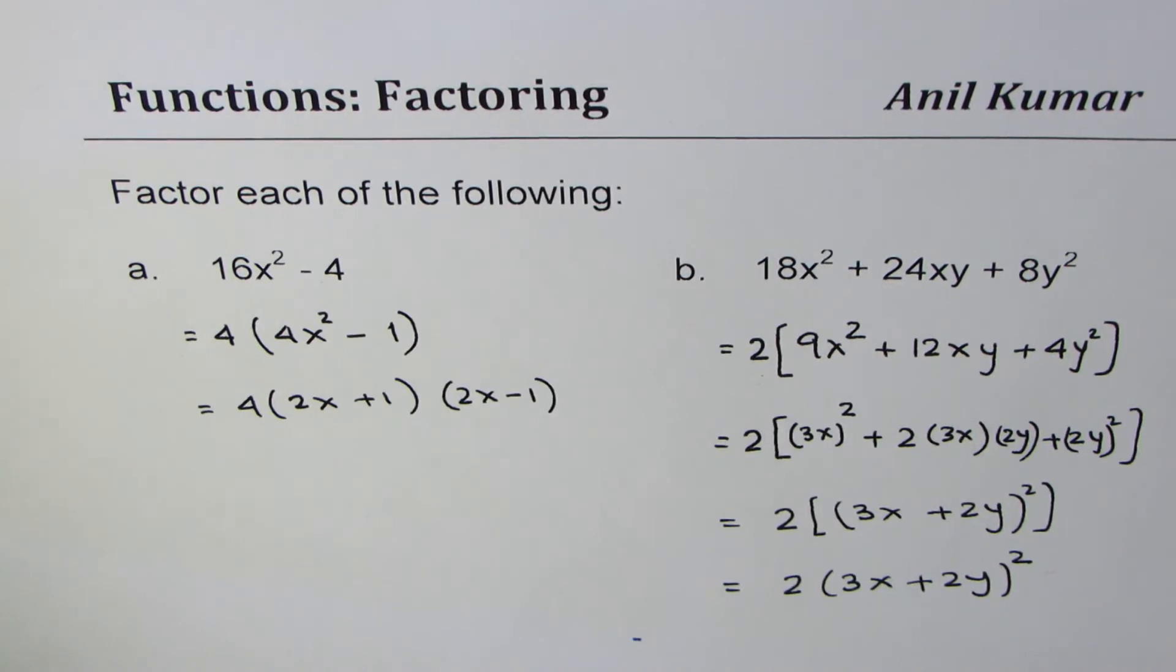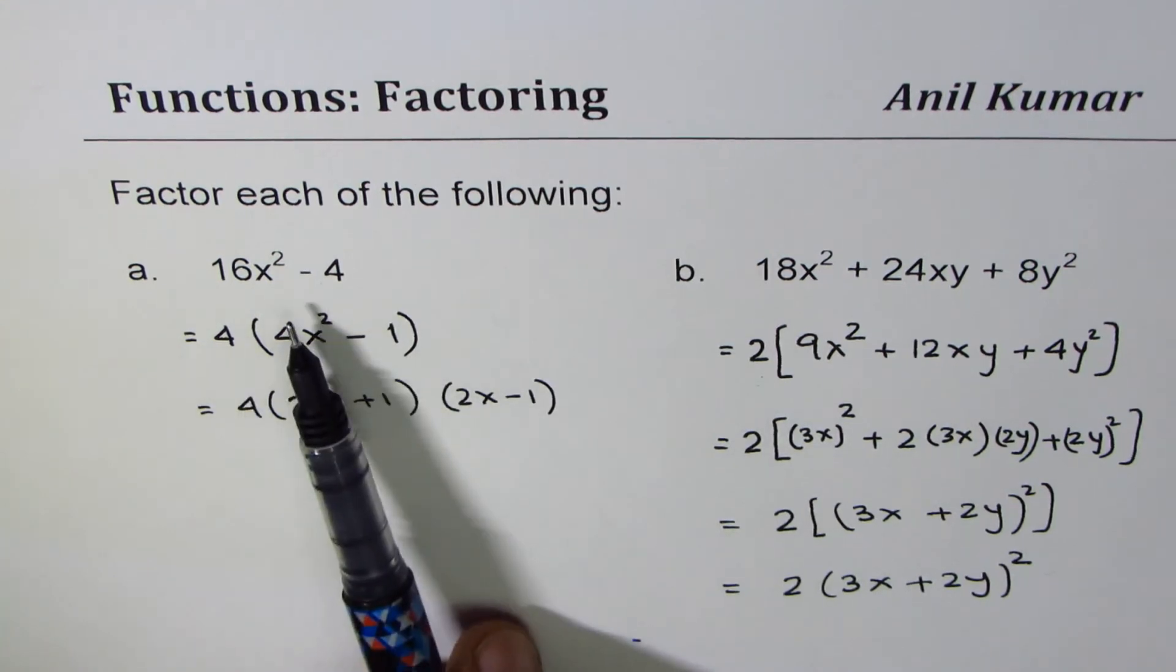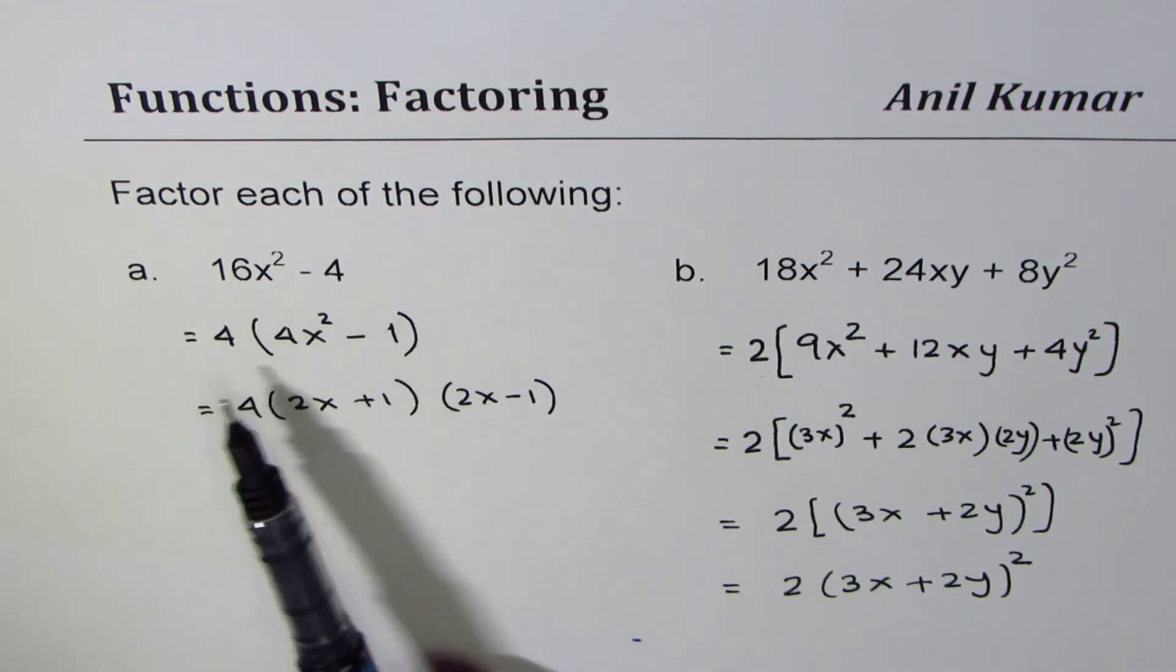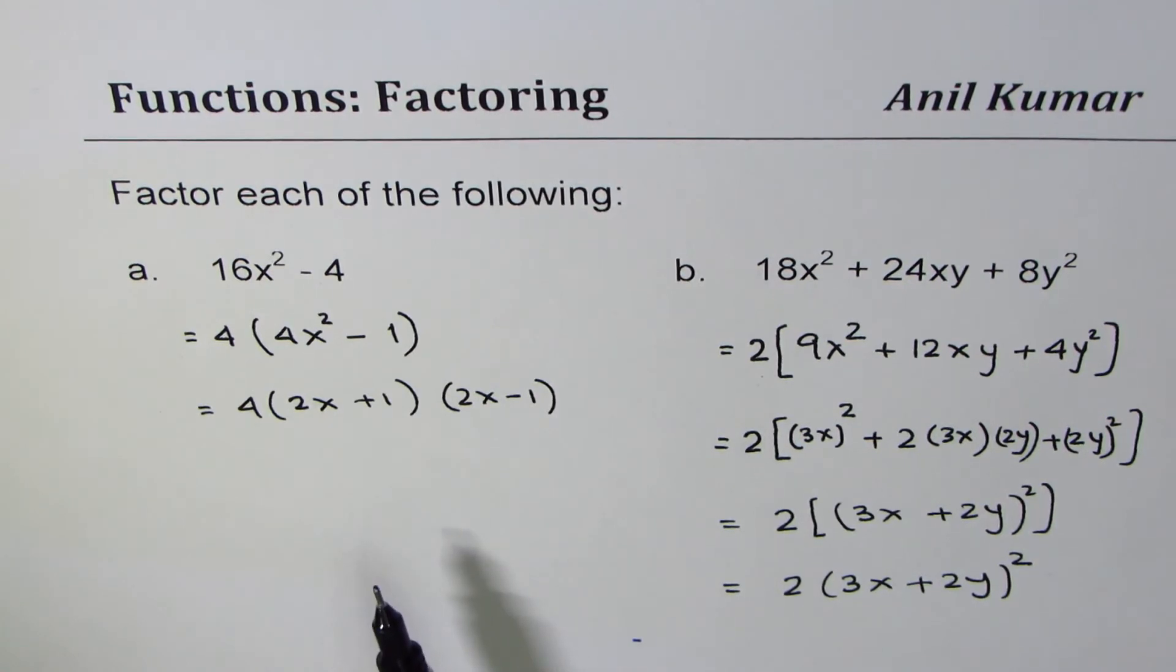Try to understand how we can factor trinomials with x and y, two variables involved. In the first case you saw we could apply difference of squares and further factor the binomial.